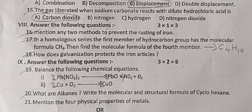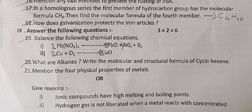Next, three-mark questions. Mention two methods to prevent the rusting of iron — answers: greasing, oiling, painting. In a homologous series, if the first member of the hydrocarbon group has molecular formula CH4, then the molecular formula of the fourth member is C4H10. How does galvanization protect iron articles? Galvanization means coating zinc metal onto iron — the zinc metal protects the iron from rusting. Next: balance the following equation — lead nitrate: put 2, then lead oxide 2, then 4 nitrogen dioxide, copper 2.